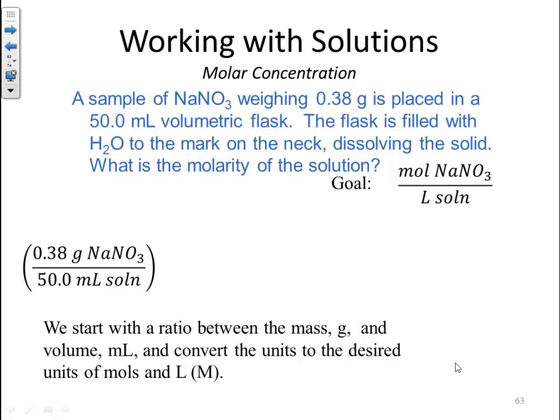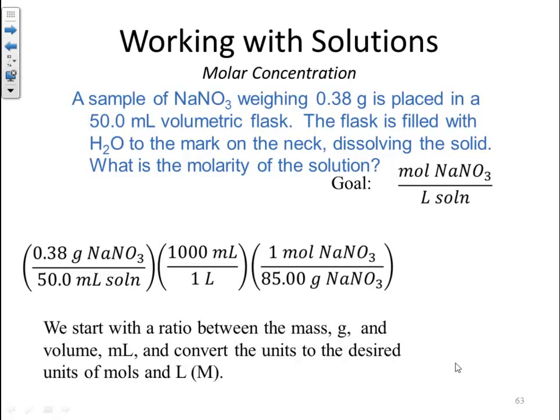Now what we need to do is convert the units to the desired units of moles and liters. So let's convert the milliliters to liters first. I know there's 1,000 milliliters for one liter. And now how do I get from grams to moles? Well, that would be molar mass. So I know for one mole of sodium nitrate, I have 85.00 grams of sodium nitrate.